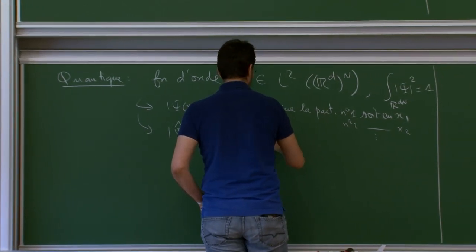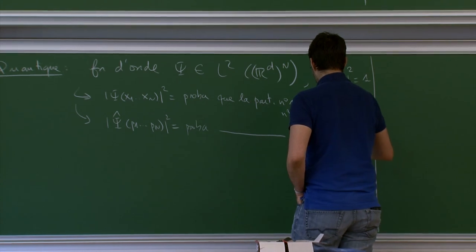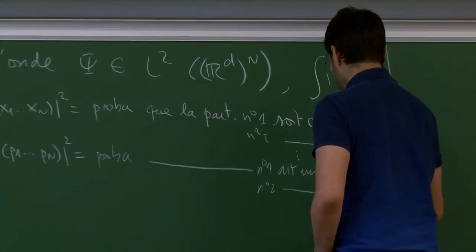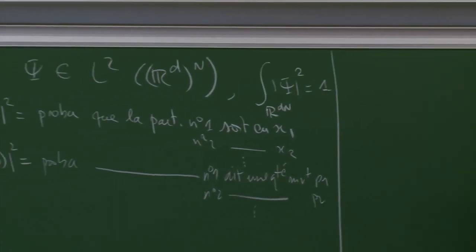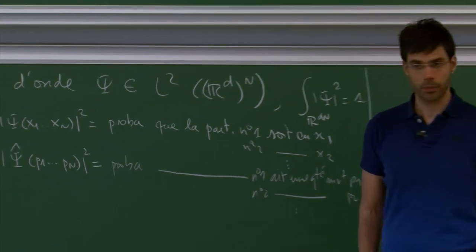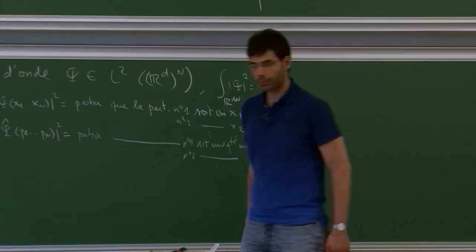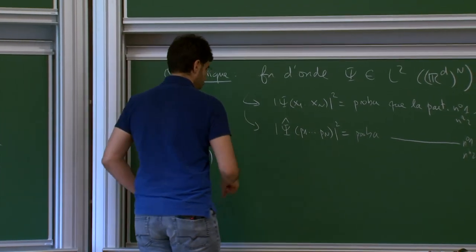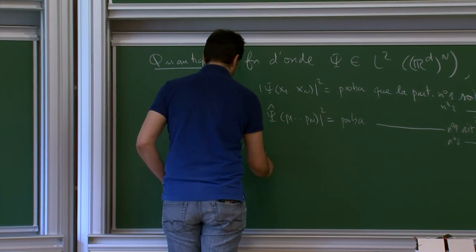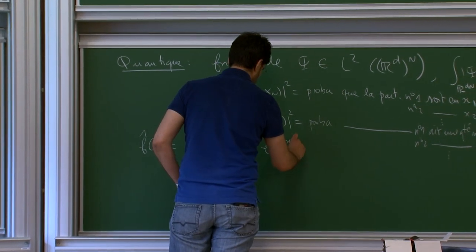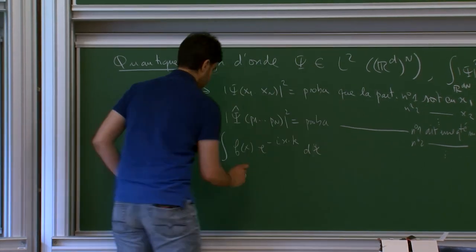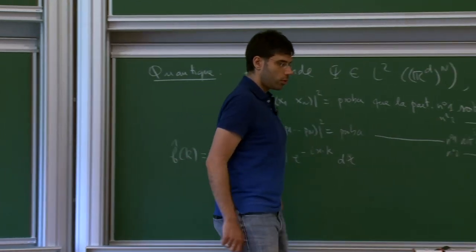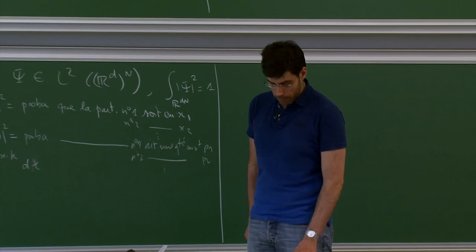The link between position and velocity is ensured by the Fourier transform. For this to give probabilities, we choose a definition of the Fourier transform that is an isometry. Throughout, f̂(k) in R^L is defined by (2π)^{−L/2} times the integral of f(x) e^{−ix·k} dx over R^L, for L¹ functions and then extended as usual. This is the convention I will use throughout for Fourier transforms.